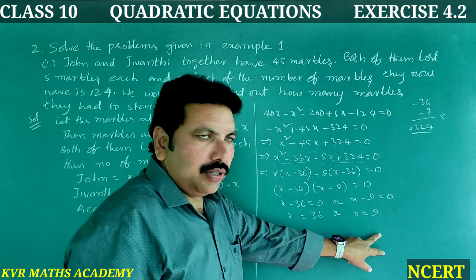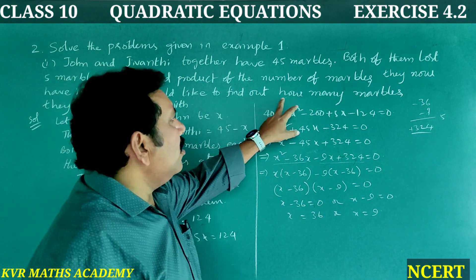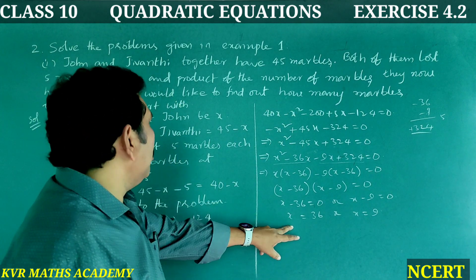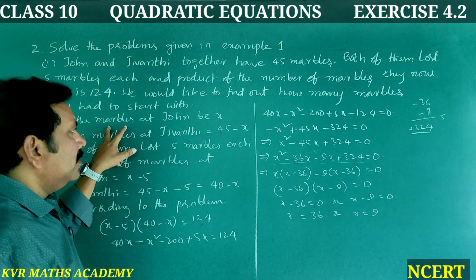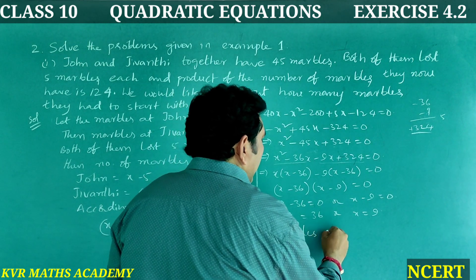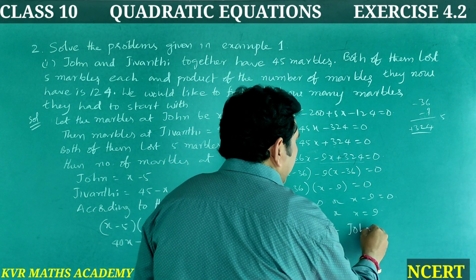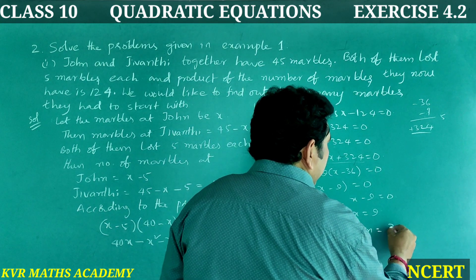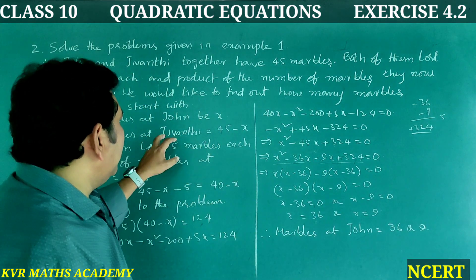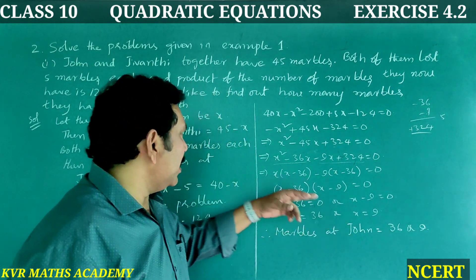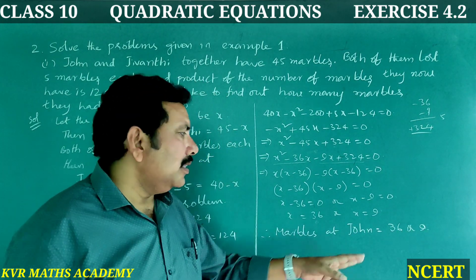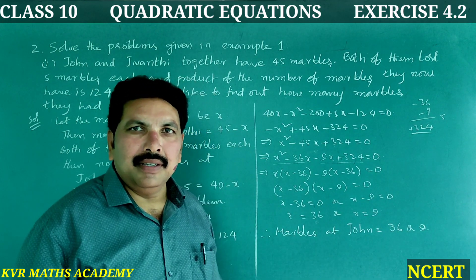x equals 36 or x equals 9. Therefore, marbles at John is equal to 36 or 9. If John has 36, then Jeevanthi has 45 minus 36 equals 9. If John has 9, then Jeevanthi has 45 minus 9 equals 36. Have you understood clearly?